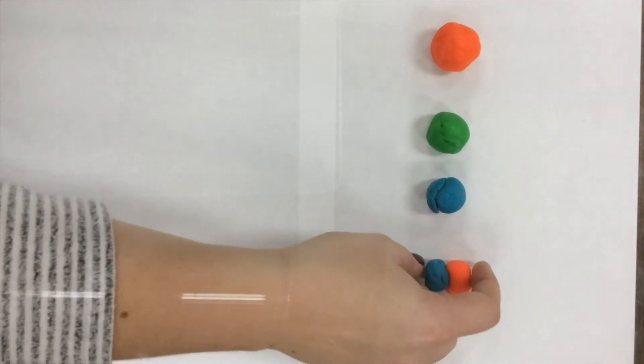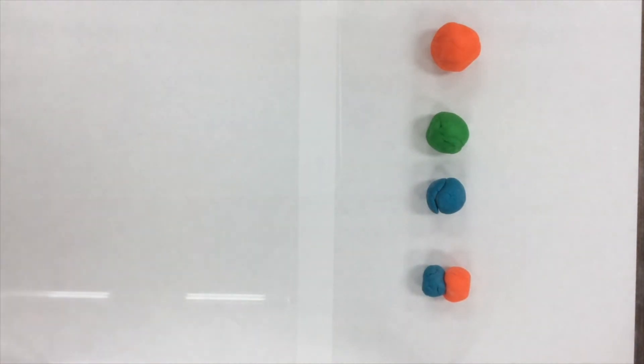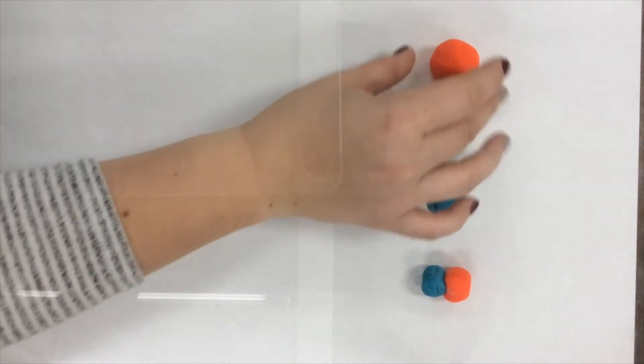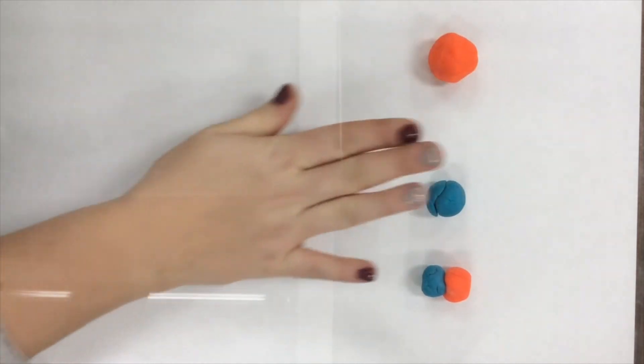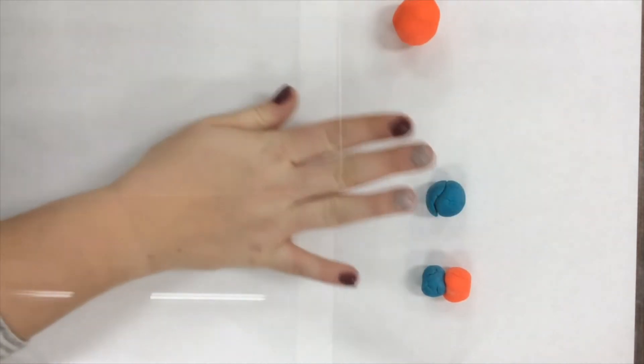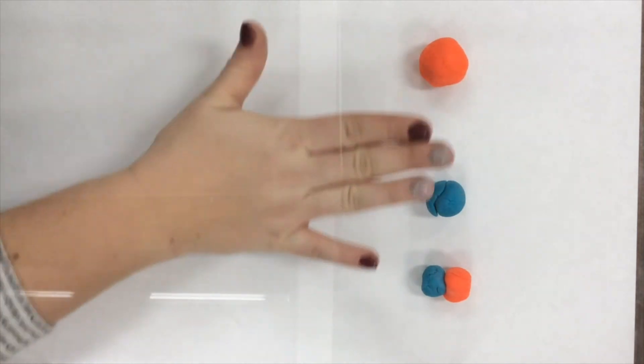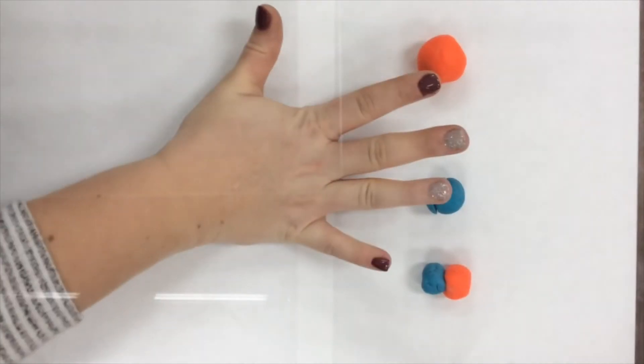Gather small amounts of modeling clay in four different colors. Each color of clay will represent a different part of the neuron. Roll the clay of one color into an acorn-sized ball and then press it flat. This piece of clay will represent the soma. In this case, I use the color green.